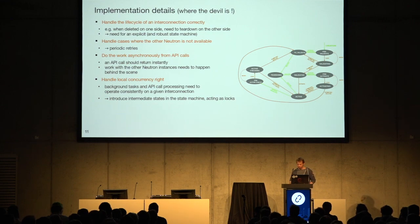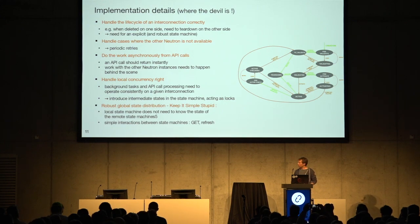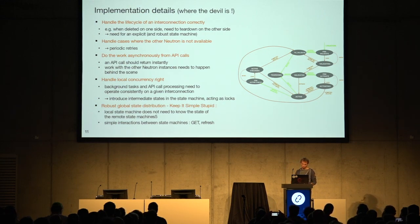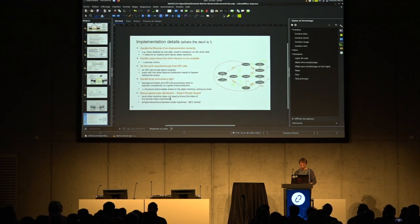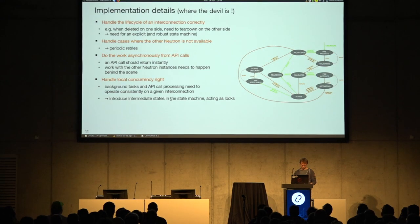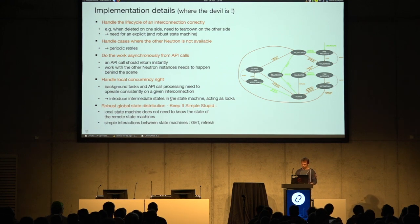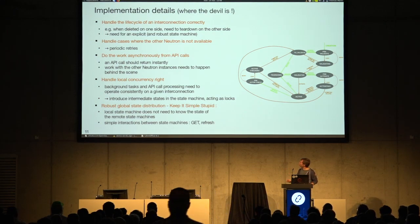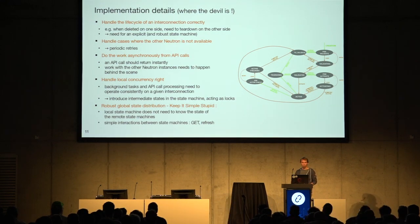We introduced intermediate states in the state machine that act as locks, resulting in a state machine that's not overly complex but complex enough. What we are doing is essentially global state distribution, but we manage to keep it simple because the local state machine doesn't need to know the state of the other state machine, and interactions between the two clouds are restricted to simple read-only operations — refresh and get.